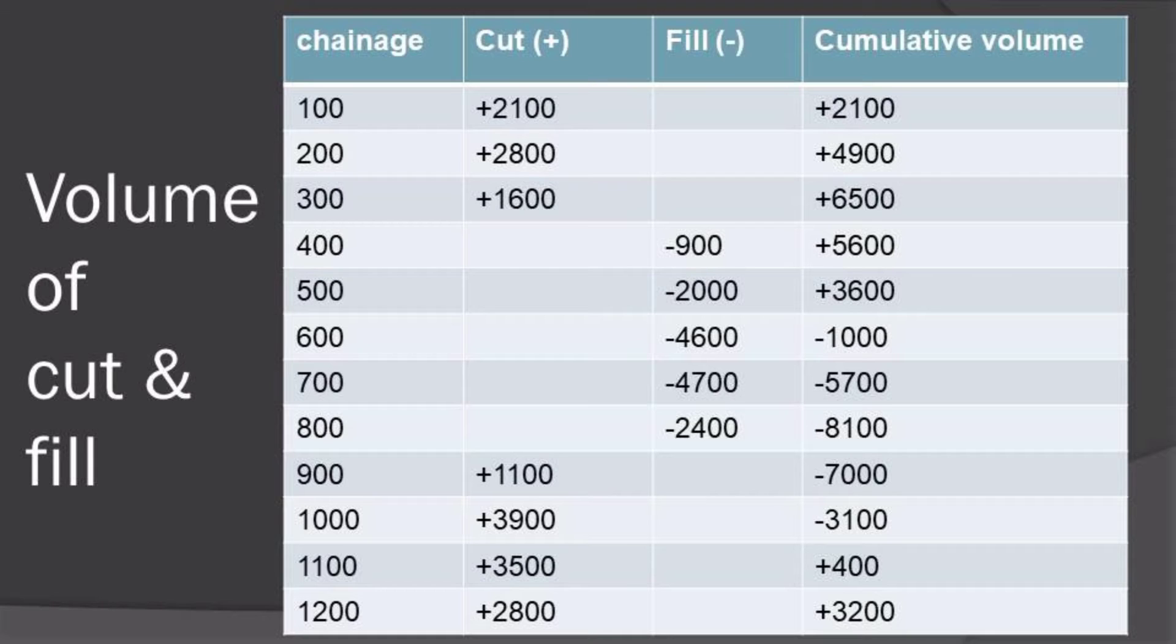So the chainages at 200 and 300 also are to be placed on the second column. In our second column we have cut and cut is being represented with a positive sign, then for fill it's a negative sign. At 400 meters we see for the first time a negative 900 meters on the volume section, hence placing it on the filling column. So that will be on the third column.